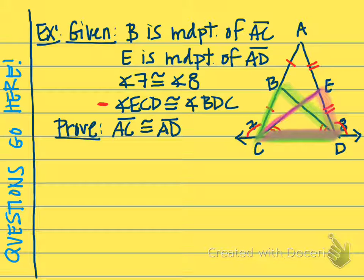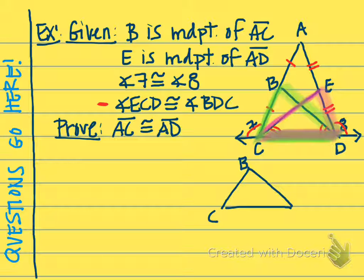So you can highlight it kind of like I did, but sometimes it's even better to redraw those two triangles to kind of separate them. So if I redraw the green triangle, it might look like this. I've got B here, C here, D here.